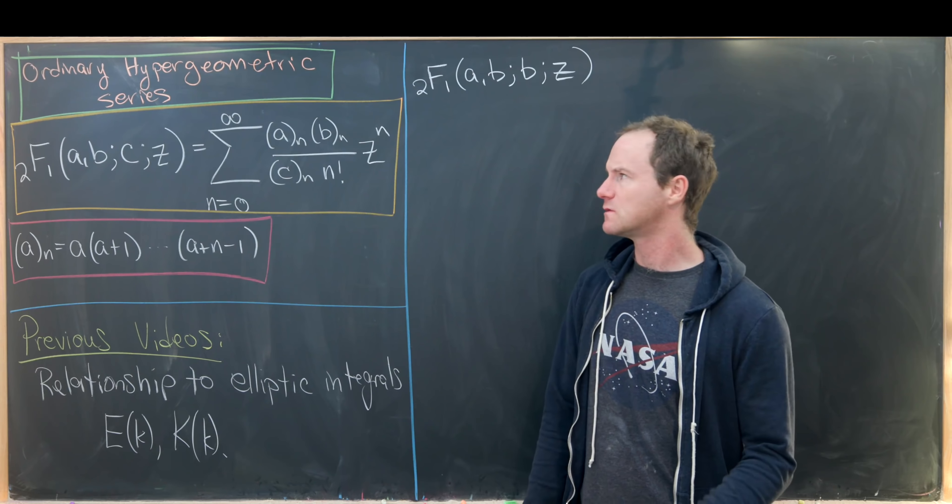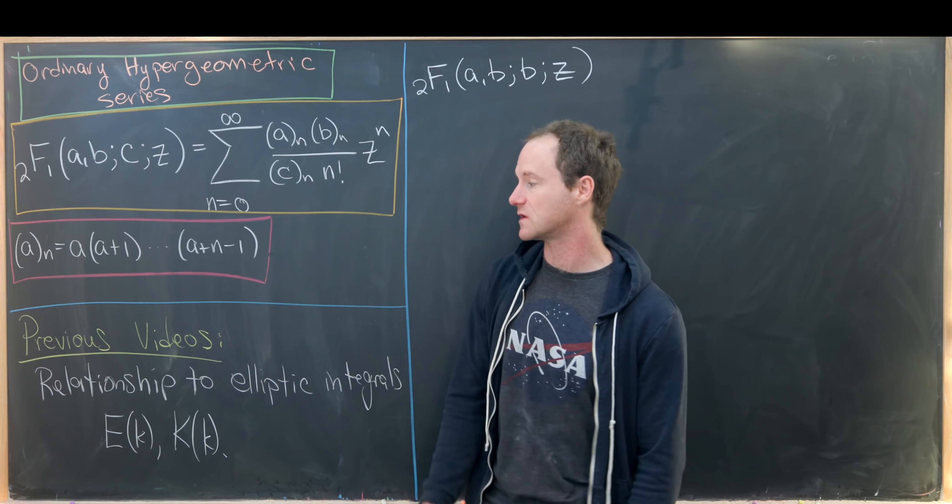Let's recall the rising factorial. So (a)_n is a times (a+1) times (a+2) all the way up to (a+n-1). This is a rising product of n terms starting at a, where a is any complex number. Armed with that, we can define the ordinary hypergeometric function or series 2F1(a, b; c; z), where c may not be a negative integer, as the sum from n=0 to infinity of (a)_n (b)_n over (c)_n n! times z^n.